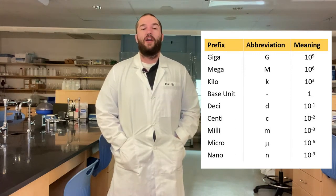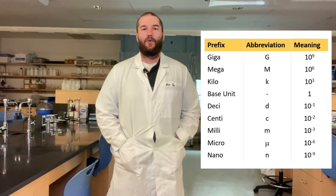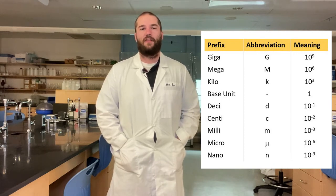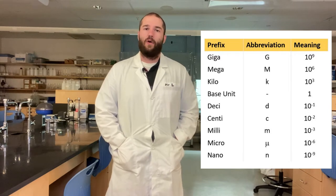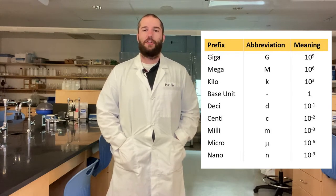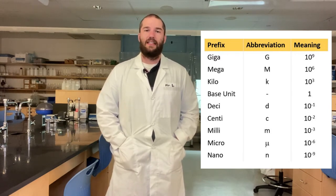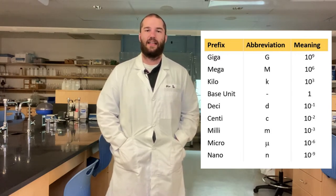From the base unit, the modifiers go positive 1, positive 2, positive 3, or negative 1, negative 2, negative 3 on base 10. And then after that, we go by sets of 3. So after 10 to the 3rd, we go 10 to the 6, 10 to the 9, 10 to the 12 — as well as in the smaller direction: 10 to the negative 3, 10 to the negative 6, 10 to the negative 9.